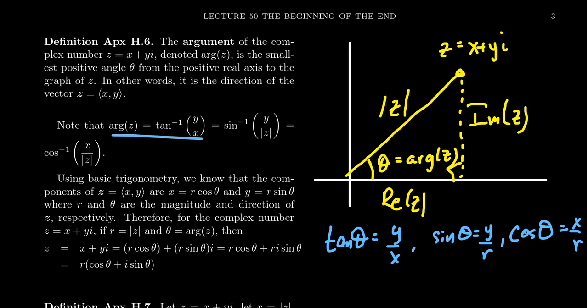Oftentimes you compute the argument using arc tangent of y over x. Be cautious, though: if you use your calculator with arc tangent, it's only going to give you the reference angle — something in the first or second quadrant for tangent. If you're in the third or fourth quadrant, you may have to use that as a reference angle. A little bit of trigonometry does us a lot of good here. We can calculate the modulus using the Pythagorean equation and the argument using SOH CAHTOA.